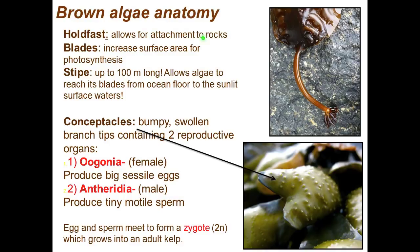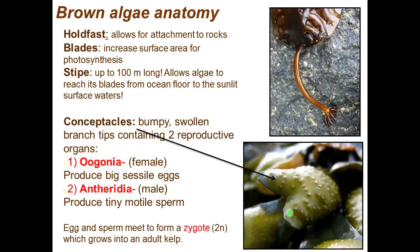The anatomy of brown algae: the holdfast attaches to rocks — kind of like roots, but its function is anchoring, not absorption. The blades are very flat, increasing surface area for photosynthesis. The stipe, up to 100 meters long, is like the stalk or stem, allowing algae to reach from the ocean floor to sunlit surface waters. The conceptacles are bumpy or swollen branch tips containing two reproductive organs: oogonia (female, producing large sessile eggs) and antheridia (male, producing tiny motile sperm). The egg and sperm meet to form a zygote, which grows into an adult kelp.